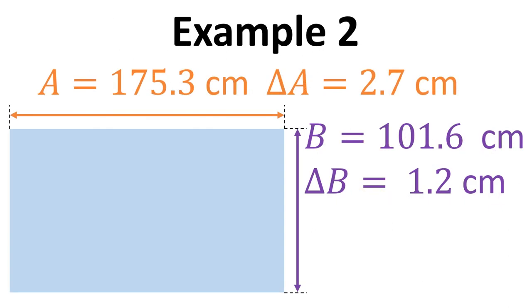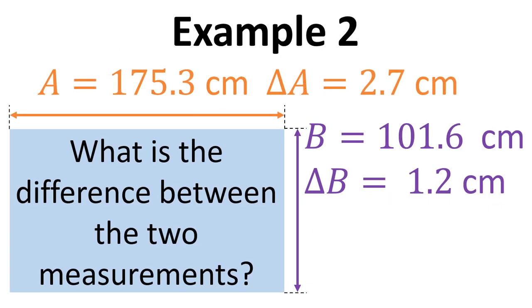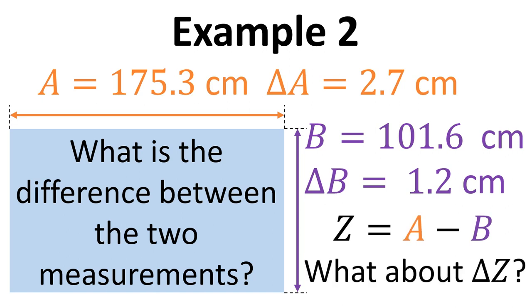So another example would be if we want to know the difference between the two measurements. So that would just be Z equals A minus B. And again we'd need to think about the delta Z.